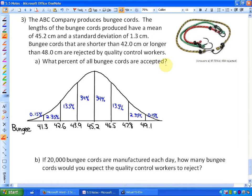So what I've done at this moment is drawn a normal distribution curve and I put the mean for the lengths of bungee cords in the middle, which is 45.2, and I've gone up by standard deviations of 1.3 in both directions.